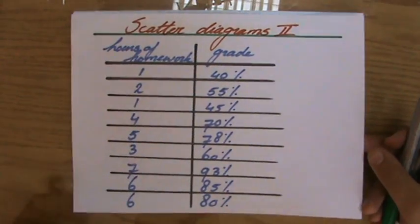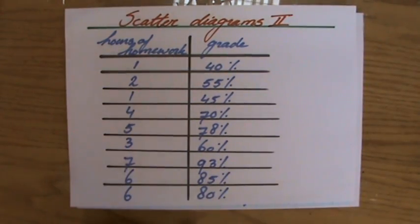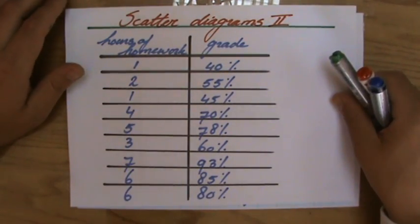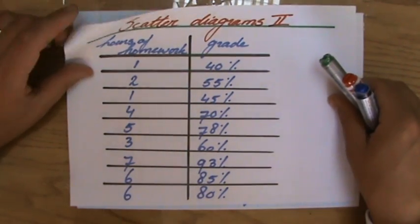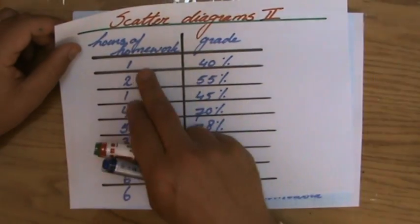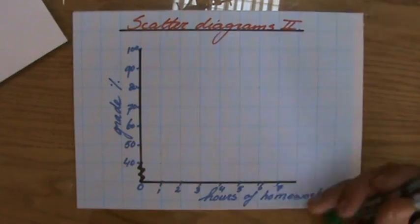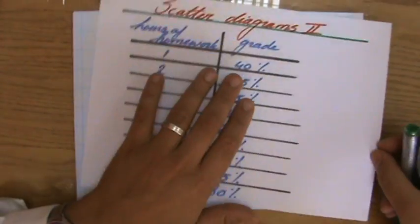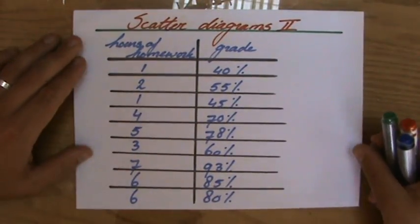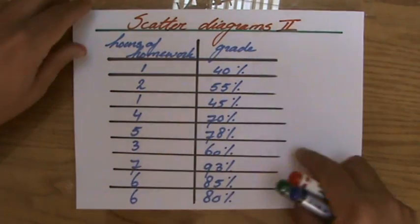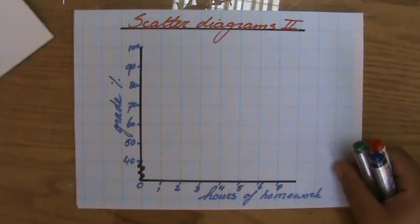That's what I'm going to do now. I'm going to plot those points, and then the second part of the question is to draw a line of best fit. I'm going to plot the points. I'm going to put this table to the side now. Maybe you want to make a copy of it yourself now, but you won't be able to see it anymore.